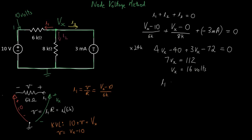Going back to the original circuit, you can see that I1, Vx minus 10, is 6 volts over 6 kilo-ohms, which gives us 1 milliamp.